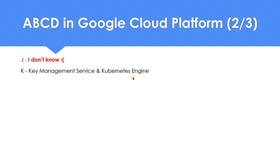Moving on to K. You have Kubernetes Engine — the most popular open-source orchestration service. And KMS, Key Management Service — if you want to keep private keys or generate a key. There are three types of encryption available in Google: Google-managed encryption key, customer-supplied encryption key, and customer-managed encryption key. In customer-managed encryption key, we use Key Management Service extensively.